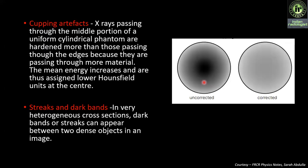Cupping artifacts: the X-rays passing through the middle portion of a uniform cylindrical phantom are hardened more than those passing through the edges, because they are passing through more material. The mean energy increases and hence the center is assigned a lower Hounsfield unit. This can be corrected.